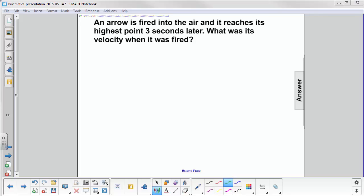An arrow is fired into the air and it reaches its highest point three seconds later. What was its velocity when it was fired?